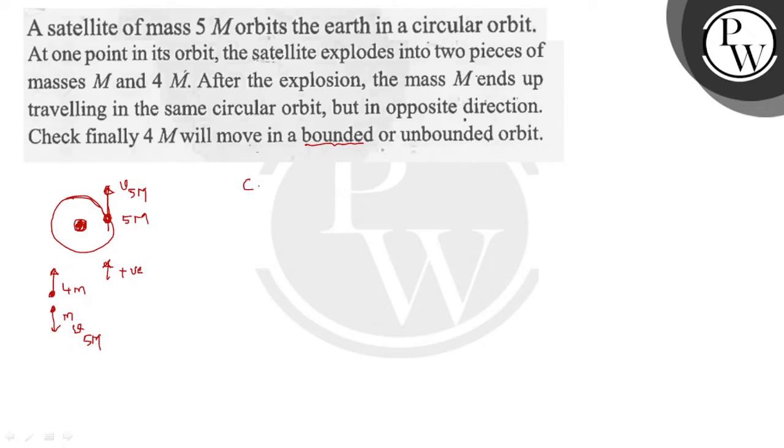If I am going to apply conservation of momentum, then what will happen? Initially it is 5m into v5m must be equal to - this is of course capital, I have written small, sorry - so 4m into v4m minus v5m into m.